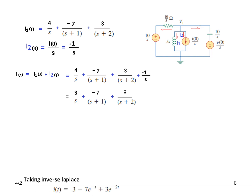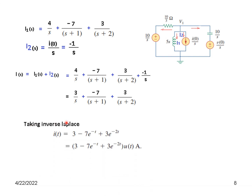Taking the inverse Laplace transform into the time domain, the total current through the inductor is: i(t) equals minus 7 e raised to the power minus t, plus 3 e raised to the power minus 2t, multiplied by u(t). This equation is valid for T greater than 0.